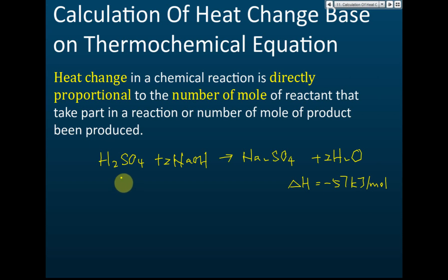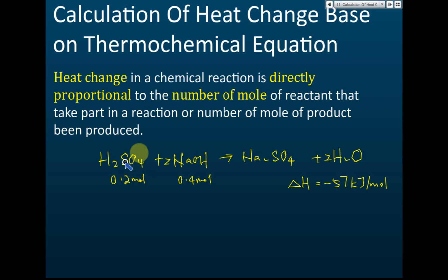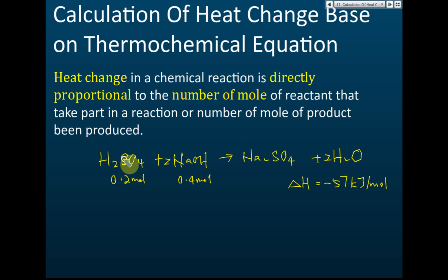If we use 0.2 mol of sulfuric acid and 0.4 mol of sodium hydroxide — the amount of sodium hydroxide must be two times the amount of sulfuric acid, because each sulfuric acid reacts with two sodium hydroxide. So if this is 0.2 mol, the NaOH is 0.4 mol. How many moles of water are produced if we use 0.2 mol H₂SO₄ and 0.4 mol NaOH? The answer is 0.4 mol.